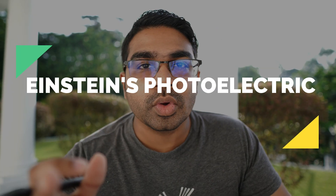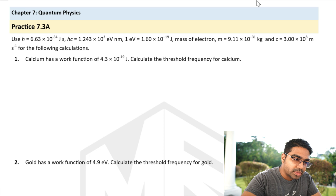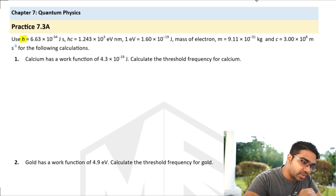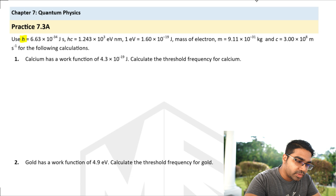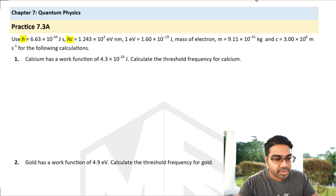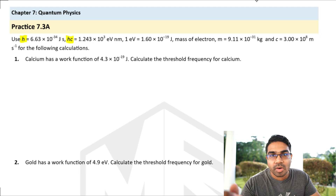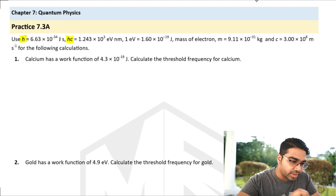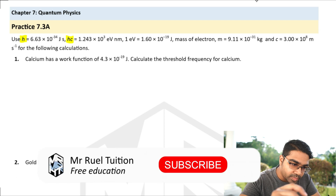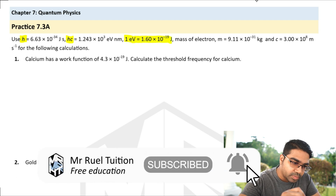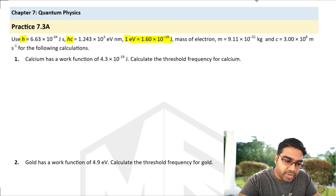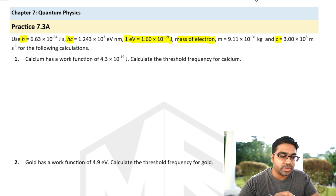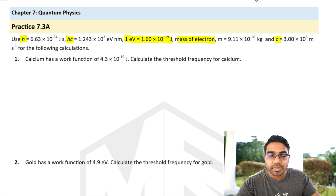In this video we'll be going through some practice questions on Einstein's photoelectric equation. First let's look at all the constants that we're given. We will be given the value of Planck's constant H, and also HC — the product of Planck's constant and the speed of light in vacuum C. We also have the conversion: one electron volt is 1.6 times 10 to the power of minus 19 joules, the mass of an electron, and the speed of light in vacuum on its own.